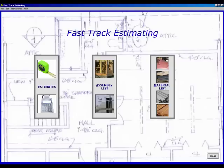In the middle, you will see an assembly list. This is where you will build and maintain all of your assemblies. An assembly is a list of labor, materials, subs, or other costs associated with some particular phase of building a job.